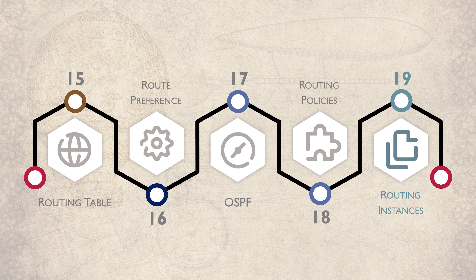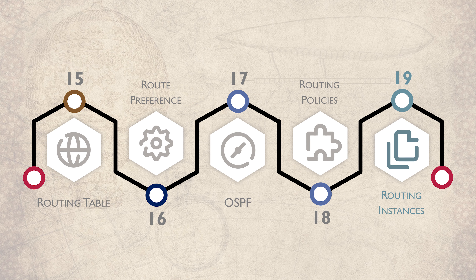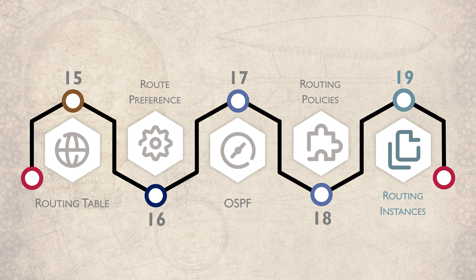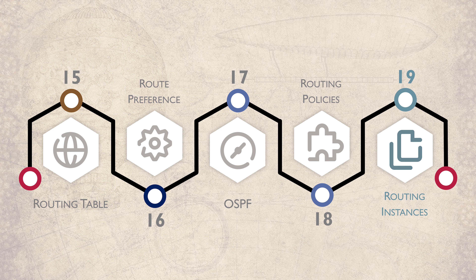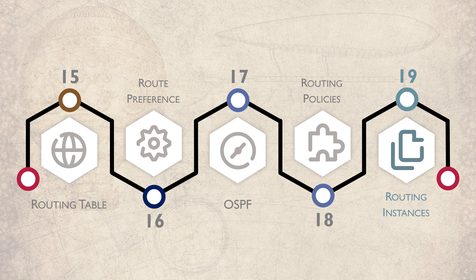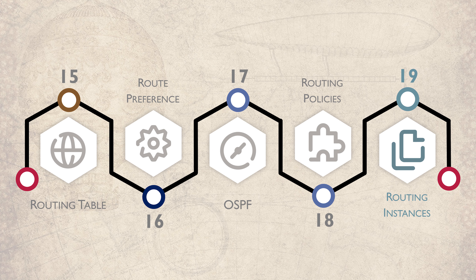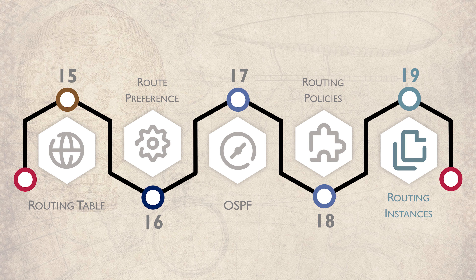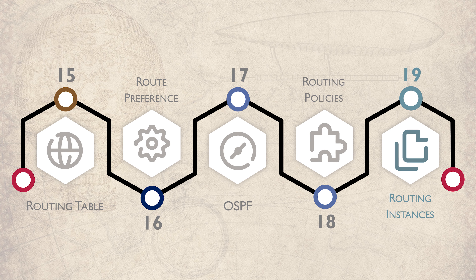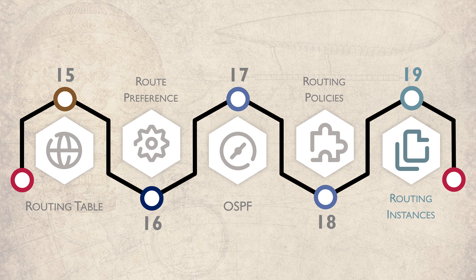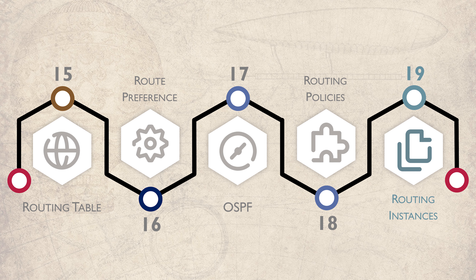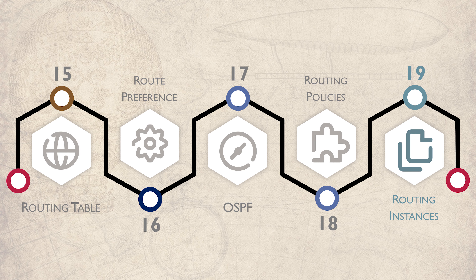Occasionally, we need to separate one type of traffic from another, perhaps because the traffic belongs to different customers, or one type is less secure. One method of doing this is by creating additional routing tables, which prevents the traffic from routing outside of its allowed area. In the Junos world, this is done with routing instances.